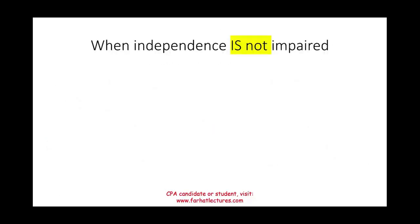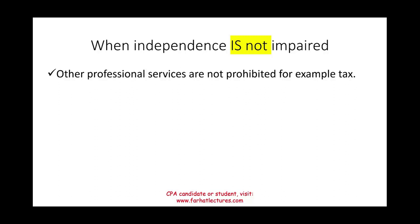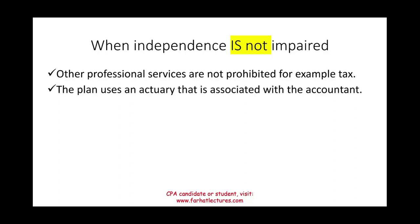We also need to know when independence is NOT impaired, because that's what they test on the exam. They'll give you a scenario and ask: is independence impaired or not? Well, other professional services, as long as they're not prohibited — for example, tax work — that's fine. They also always talk about the actuary. The plan can use an actuary that is also associated with the accountant. An actuary is a specialist in actuarial science who estimates the liability — how much the company is responsible for to have the plan fully funded, based on number of employees, how long they'll live, and so forth. The plan can use an actuary, and that actuary can also be hired by the accountant for other purposes. There is no conflict of interest there.